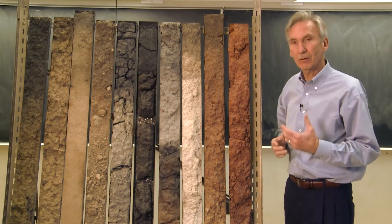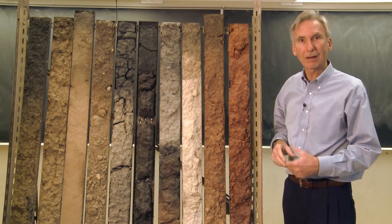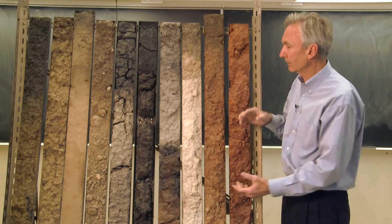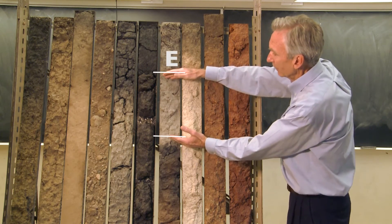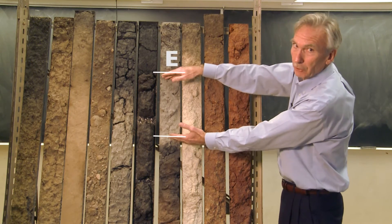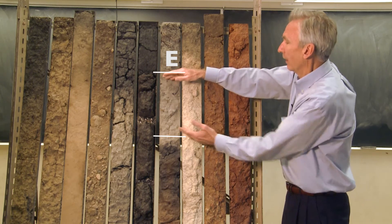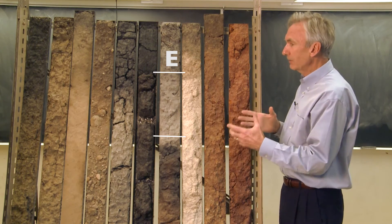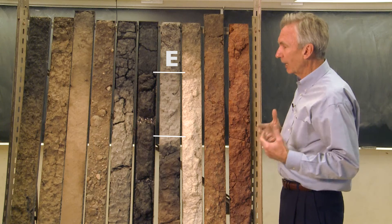The other master horizon is called the E horizon. The E horizon is a leached, bleached horizon, which means that everything has been leached out of it.